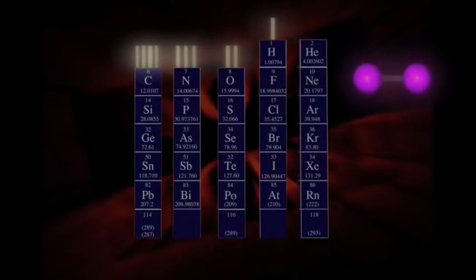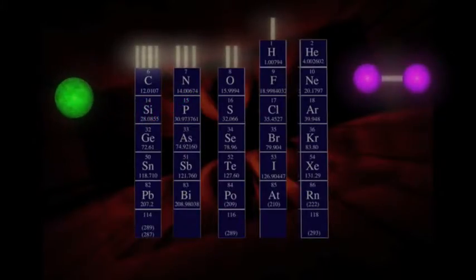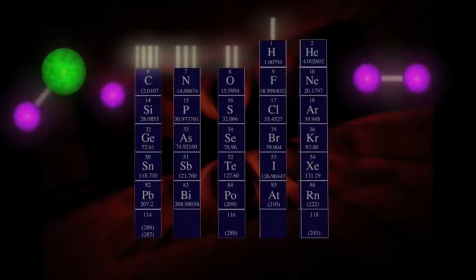Another example is water. We can see that oxygen wants to make two bonds, because it is in the second column from the right. So it can get together with two hydrogen atoms, which each want to make one bond, and all three atoms are happy.